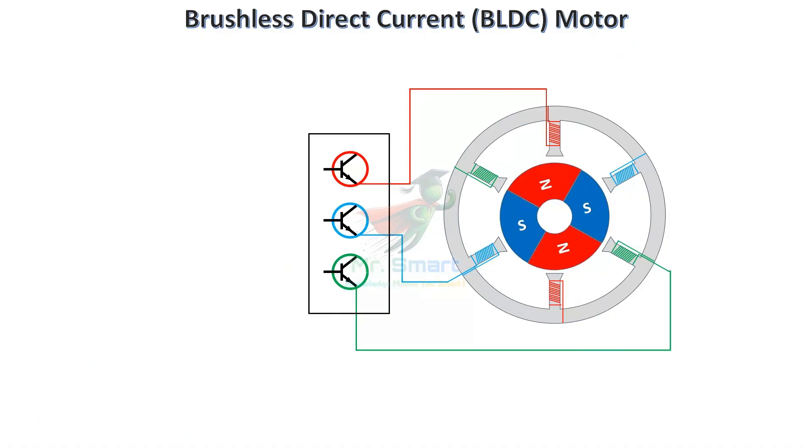BLDC stands for brushless direct current motor. Unlike traditional DC motors, BLDC motors rely on electronic switching using transistors instead of brushes and commutators. This makes them more efficient, durable, and low maintenance.